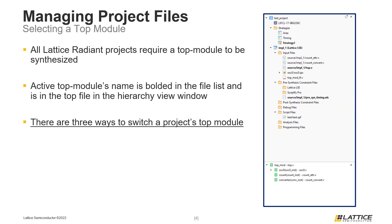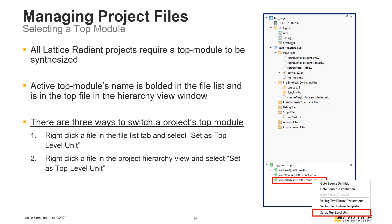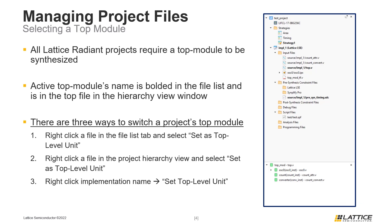There are three ways the top module for a project can be changed. The first way is to right-click the file of the new top module in the File List tab and select Set as Top Level Unit from the drop-down. Another way is using the project's Hierarchy view — right-click the file you want to set as the top module and select Set as Top Level Unit. The third way is using the project's implementation settings: right-click the name of the active implementation from the File List tab and select Set Top Level Unit from the drop-down. This opens the settings for the selected implementation, where users can manually enter the name of the module in the top level unit field.